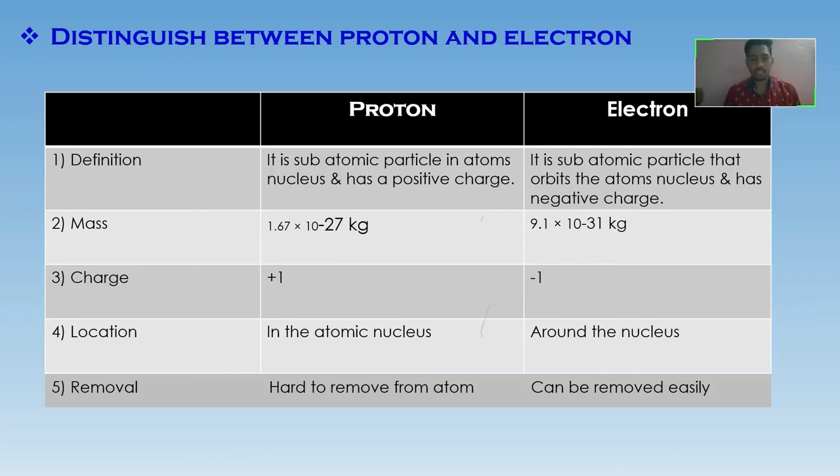Charge on proton is plus 1 and charge on electron is minus 1, as proton is positively charged and electron is negatively charged. Its location: proton is situated inside the atomic nucleus while electron is around the nucleus.